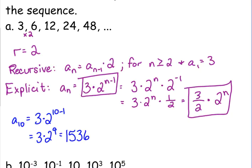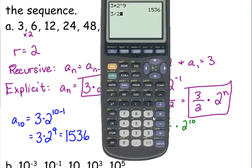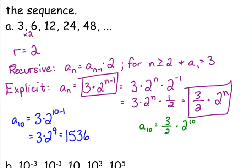That final answer is 1,536. I could have also plugged it in to this other version and done 3 halves times 2 to the 10th. 3 over 2 times 2 to the 10th gives me the exact same number, 1,536. It doesn't matter which way I look at it. That is the 10th term here.